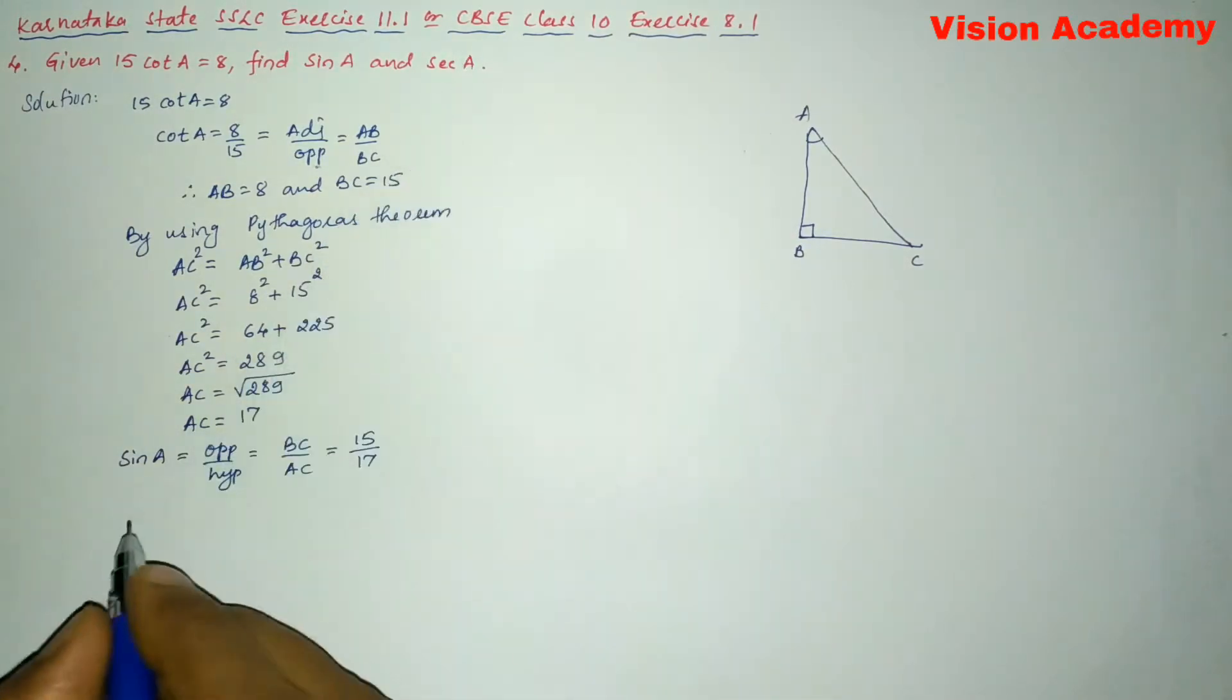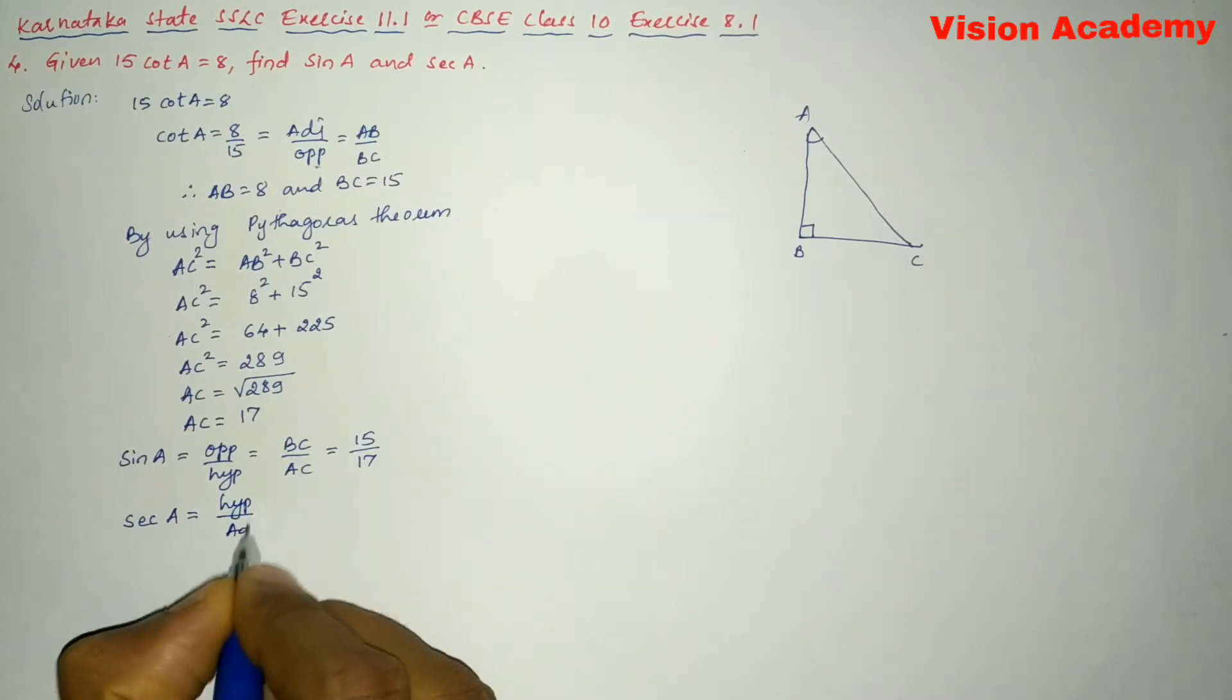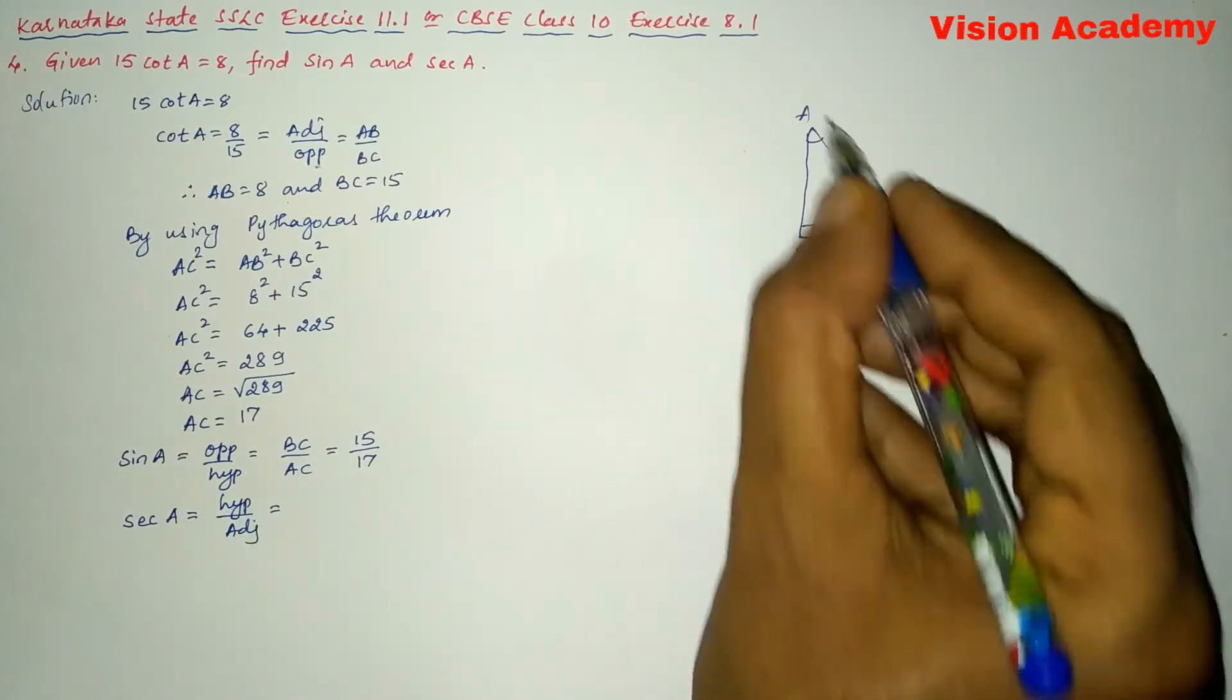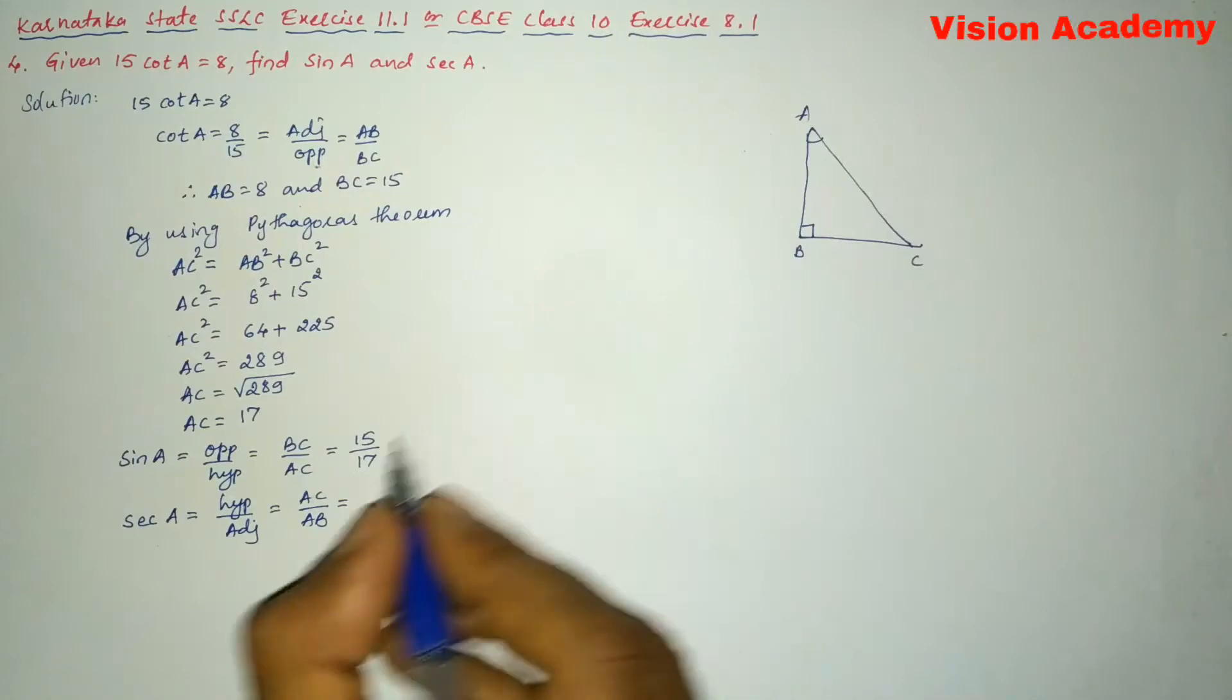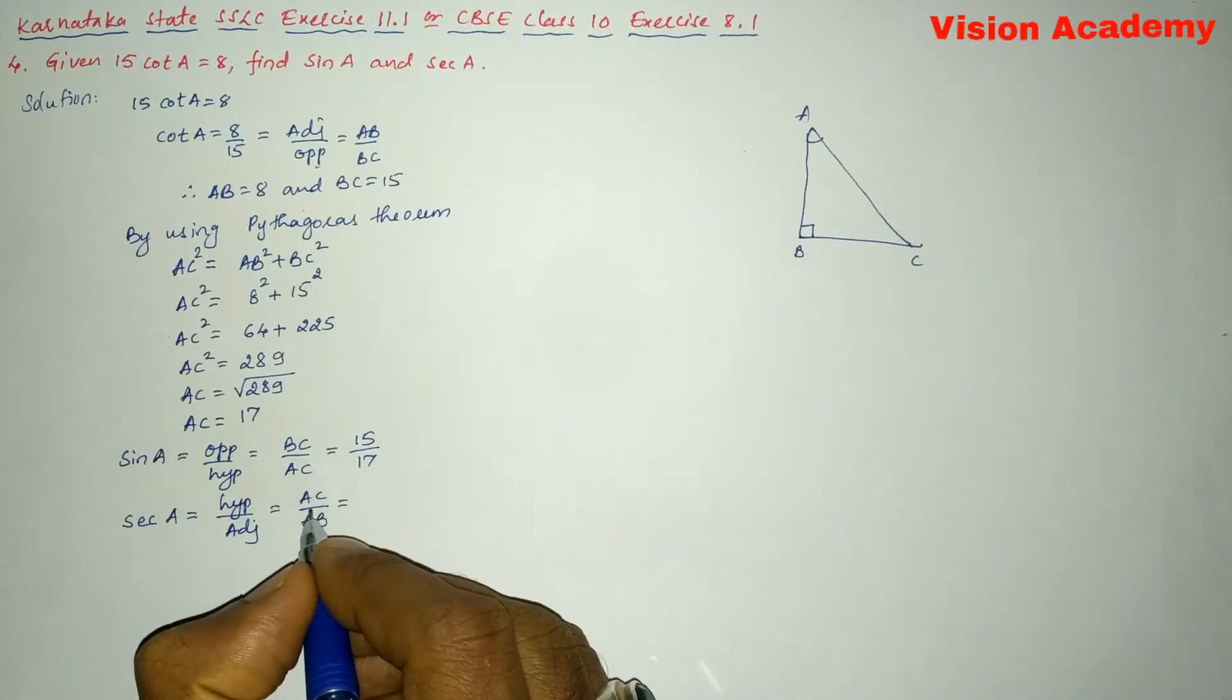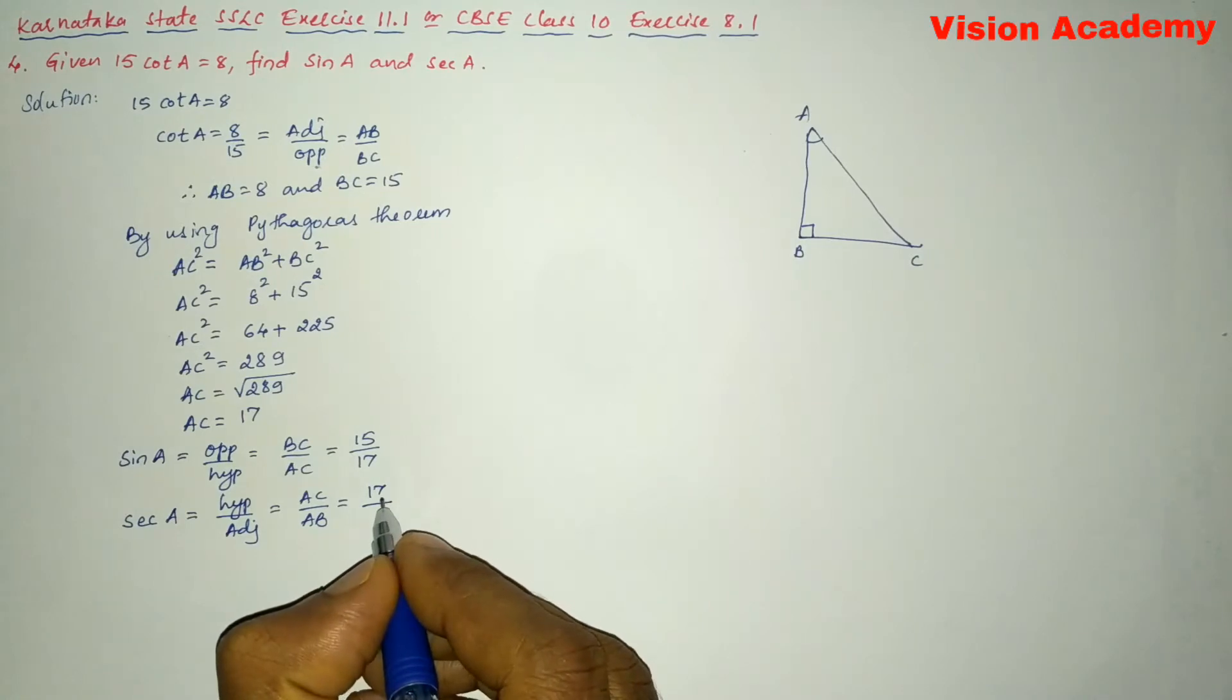Next we will move on to sec A. Sec A is equal to hypotenuse by adjacent, which is equal to... here hypotenuse is AC and adjacent is AB. So this AB. Here we will write AC as 17 and AB is 8.